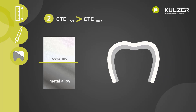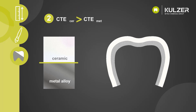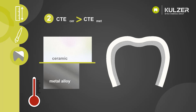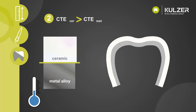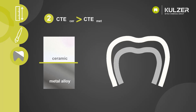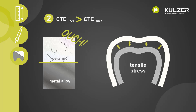Second, the CTE of the ceramic is higher than that of the metal alloy. That means the ceramic expands more than the alloy, and accordingly this ceramic is also reduced in length more to get back to the original size. In our crown, this difference in length leads to tensile stress — the metal alloy and the ceramic pull towards each other like chewing gum. The result is chipping and cracking of the ceramic because it cannot withstand the tension.